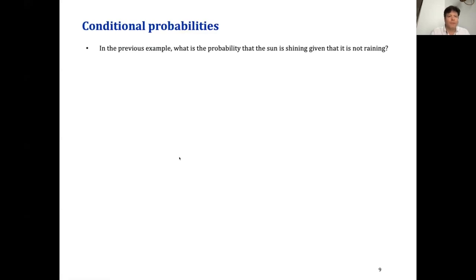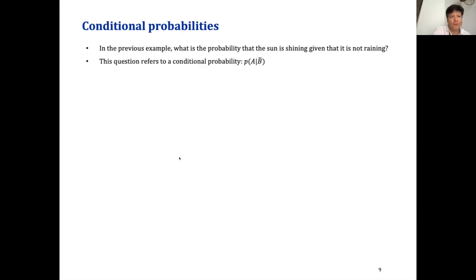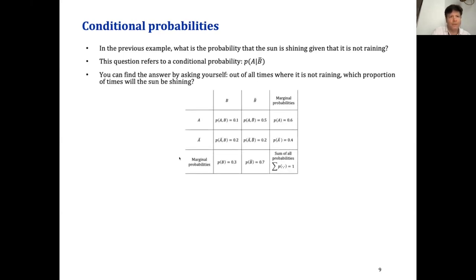Now, conditional probabilities. In the example, what is the probability that the sun is shining given that it is not raining? We know it's not raining — but how does that affect the probability that the sun is shining? This can be written as the conditional probability of A given not-B. You can find the answer by asking: out of all times where it is not raining, what proportion of times will the sun be shining?